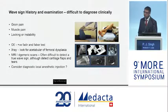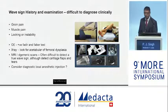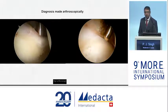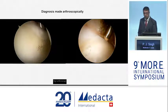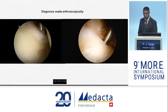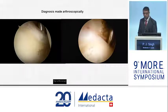When assessing patients specifically for wave signs, it is very difficult to make this diagnosis purely on clinical and radiological grounds. The gold standard of diagnosing a wave sign remains arthroscopic assessment, where you probe the chondrolabral junction and look for signs of a wave. This wave sign can be localised or much more widespread, as seen in this case on the right.